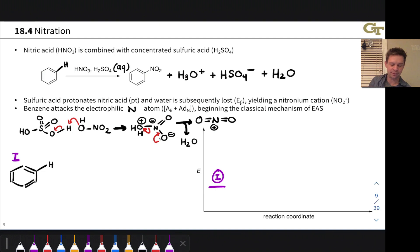The nitronium cation is profoundly electrophilic at nitrogen, and it can be the active electrophile E+ in a reaction with an aromatic ring. And so the first step, as we've seen many times already, is coordination of the benzene ring to the electrophilic nitrogen through an A sub E elementary step.